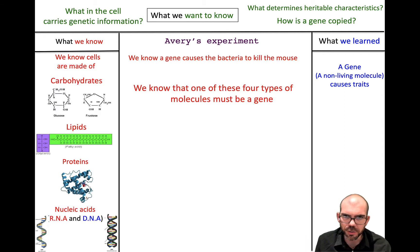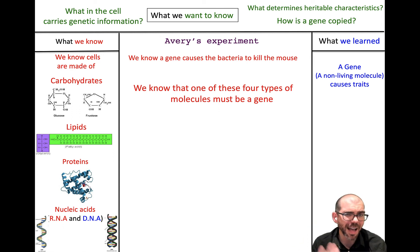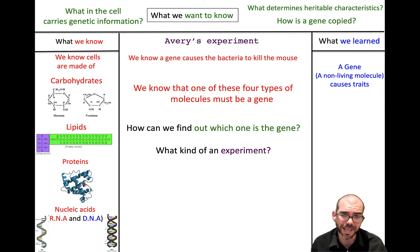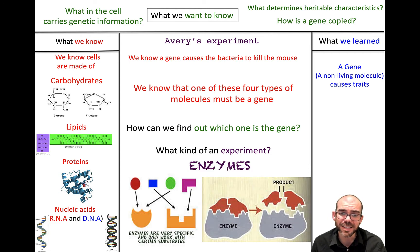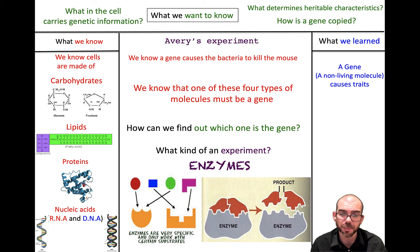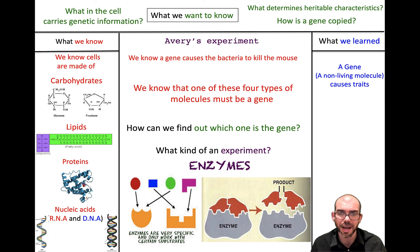Avery realized that there are four molecules that make up all of life — carbs, lipids, proteins, and nucleic acids — and determined that one of them had to be this molecule. He wondered what kind of experiment could isolate whether it was a carb, lipid, protein, or nucleic acid causing the transformation observed by Griffith. To do this, Avery turned to enzymes — proteins that break one specific substrate — as a great way to identify which molecule is responsible.